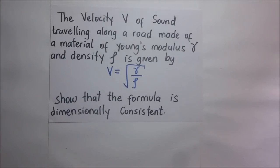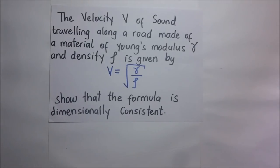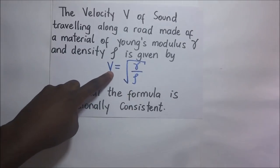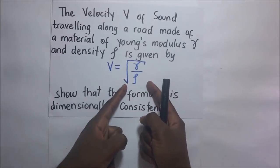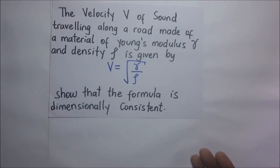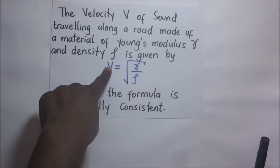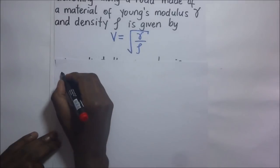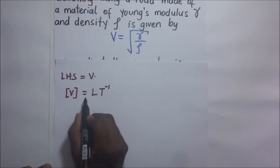The velocity V of sound in a material with Young's modulus α and density ρ is given by V = √(α/ρ). We need to show this formula is dimensionally consistent. The left-hand side V has dimensions LT⁻¹. We now find the dimensions on the right-hand side.